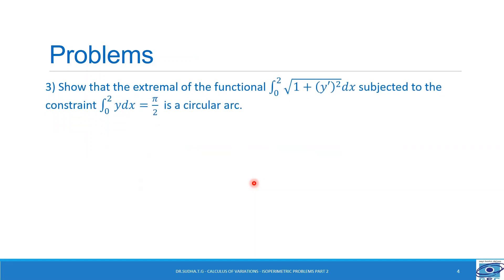In the previous session, we had solved two problems. Now let us take the third one: show that the extremal of the functional integral from 0 to 2 of root of 1 plus y' dx, subjected to the constraint integral 0 to 2 of y dx equal to 5 by 2, is a circular arc.